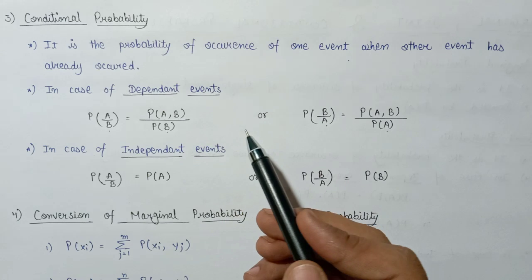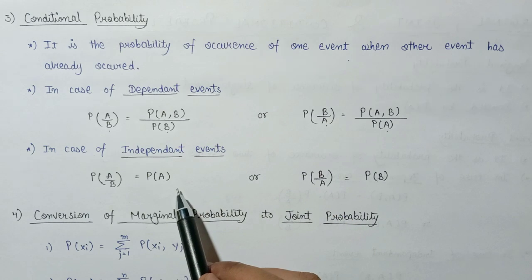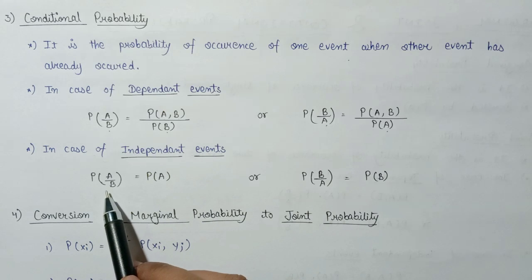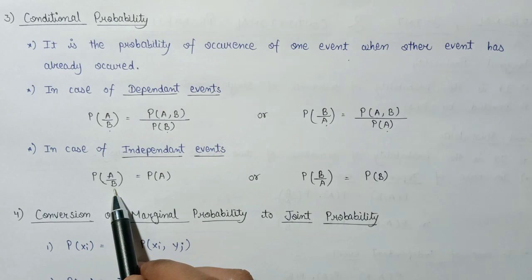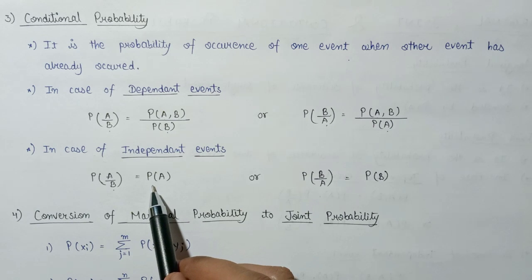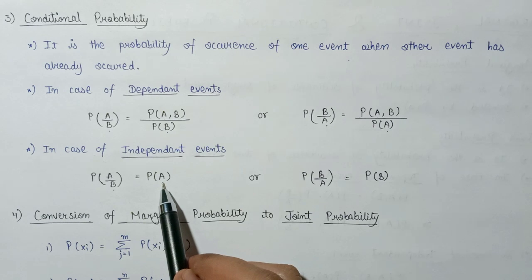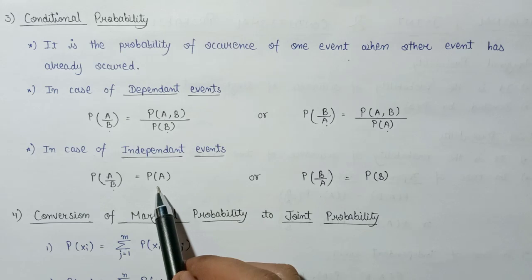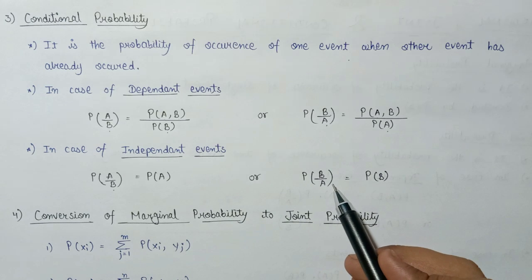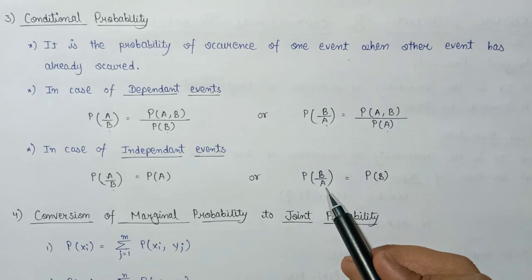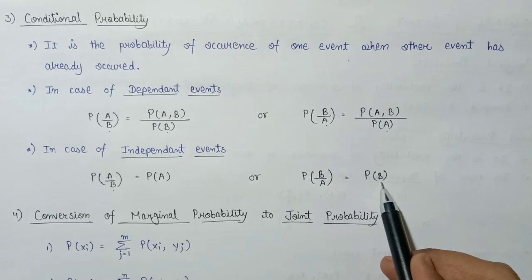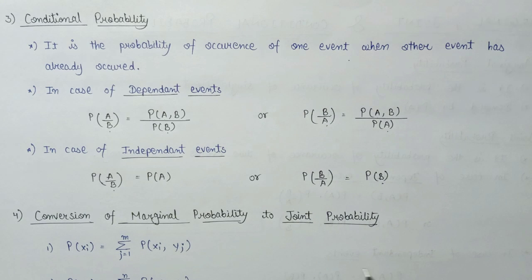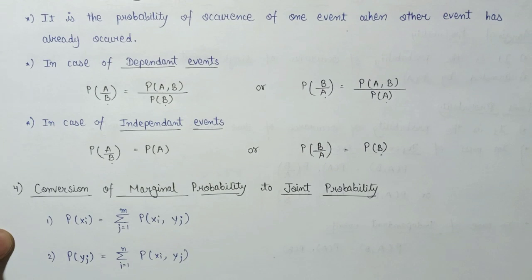Now let's look at the formula for independent events. The conditional probability of event A when event B has already occurred is equal to the marginal probability of event A only. Similarly, the conditional probability of event B when event A has occurred is equal to the marginal probability of event B.